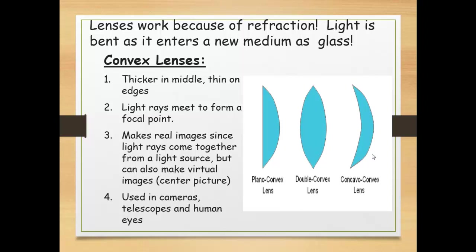And we have something else called lenses. So we have a plane mirror and we have a curved mirror. Lenses work because of refraction. Light is bent as it enters a new medium such as glass.